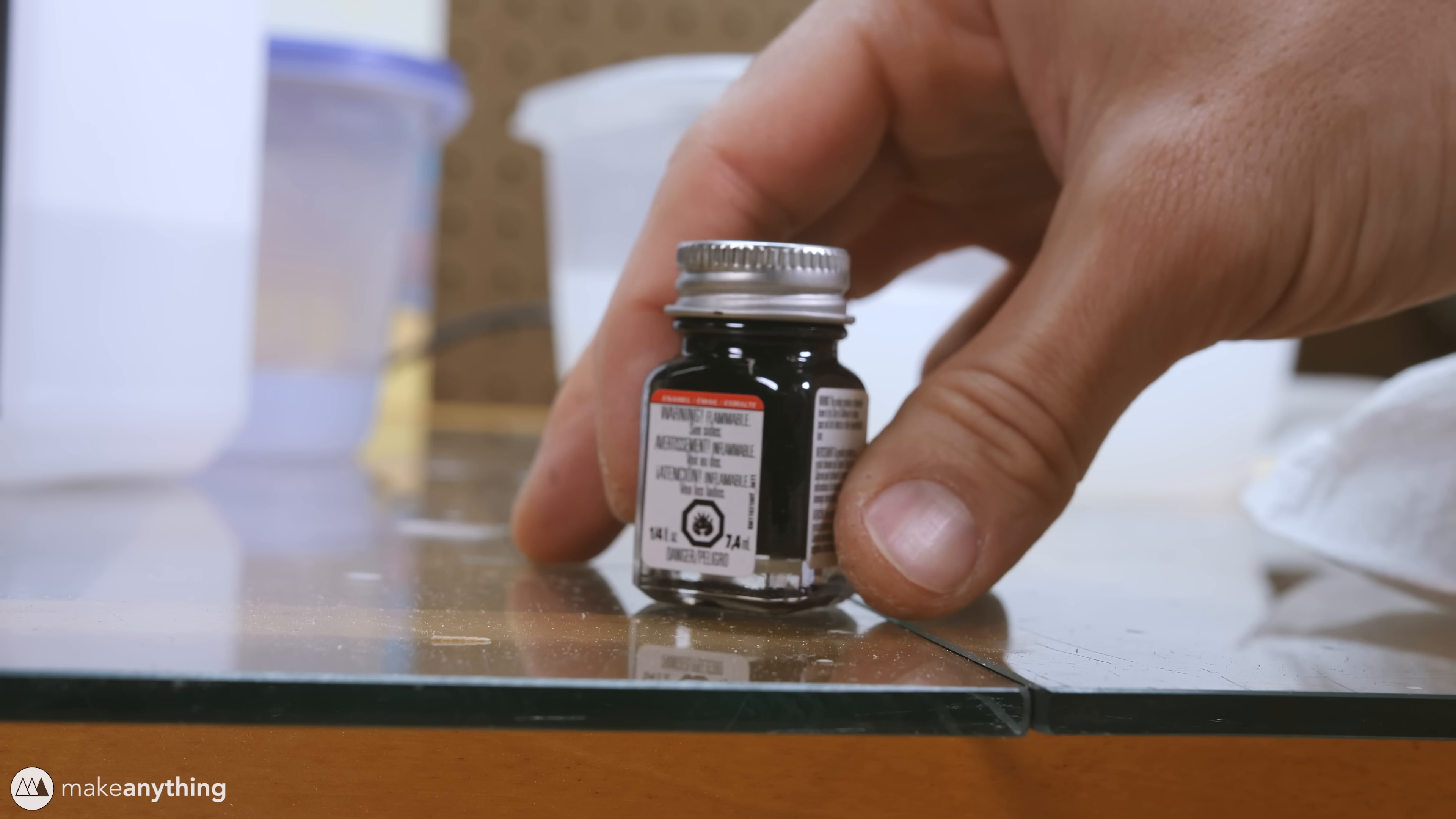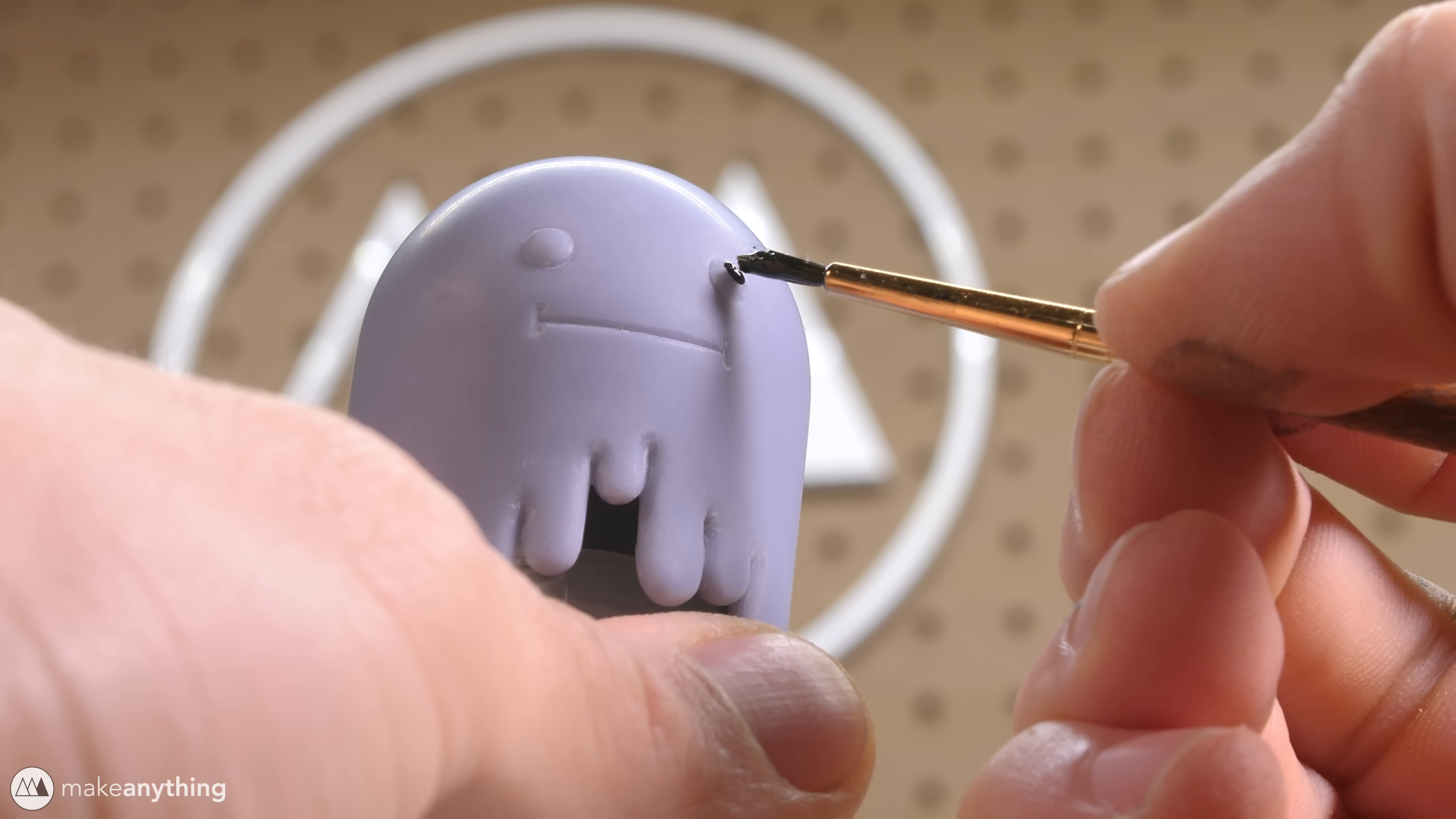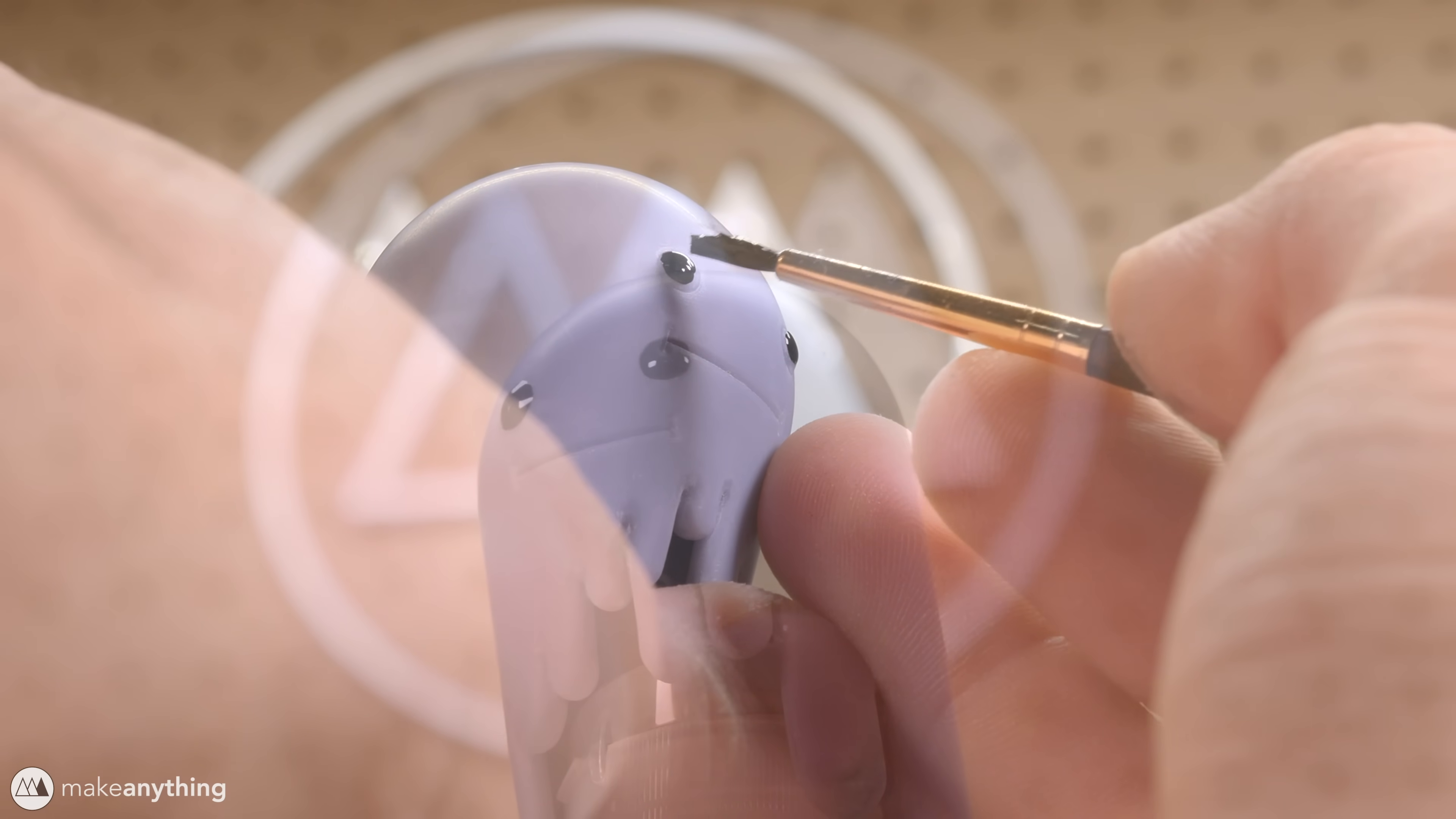I'm also going to be using this black enamel paint by Testers for the eyes of our creature since enamel paint leaves this really nice shiny finish which I think is perfect for giving this little guy some life. You kind of only have one shot with this so that was definitely a little nerve-wracking but I think I did a pretty good job.